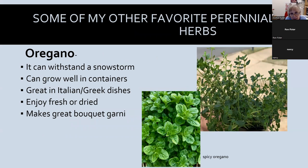Oregano probably has the biggest zone range I know of — I think it goes from zone 4 to at least zone 10. It would withstand a snowstorm in western New York and just come up every year looking great. I have Italian oregano in a pot and also a spicy variety called Hot and Spicy oregano.